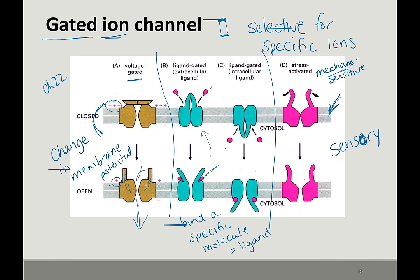The example of a ligand-gated channel in your book is the CFTR channel, which is a chloride ion channel important for regulating chloride concentrations and, more importantly, water concentrations. In people with cystic fibrosis, there is a mutation in this channel that prevents it from binding the ligand efficiently, so the channel doesn't work correctly. Make sure you read about cystic fibrosis in the textbook.